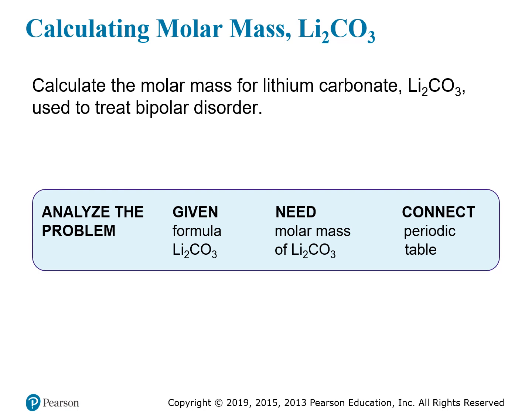For lithium carbonate, for example, this is an ionic compound composed of two lithium ions and one carbonate ion. The carbonate ion itself is composed of a carbon atom and three oxygen atoms. So for every mole of lithium carbonate, we have two moles of lithium atoms, one mole of carbon atoms, and three moles of oxygen atoms.